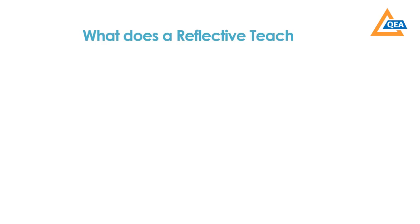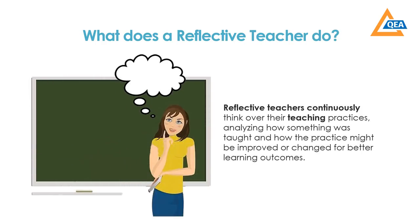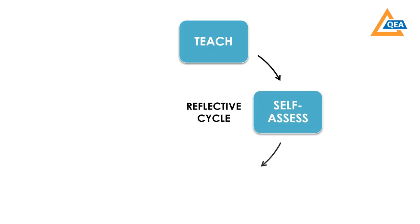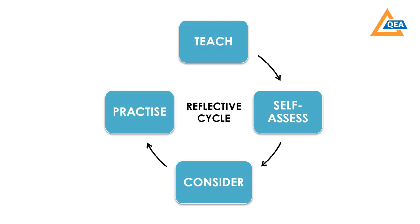What does a reflective teacher do? Reflective teachers continuously think over their teaching practice. They keep analyzing what is working well and what isn't, so that the learning outcomes can be enhanced. A reflective teacher teaches, then does a self-assessment, then considers what changes are to be done, integrates those changes in the practice and teaches again. This way, the cycle continues.